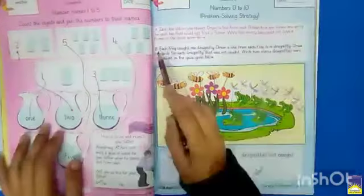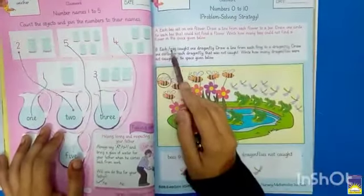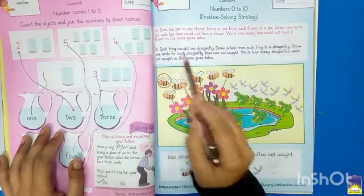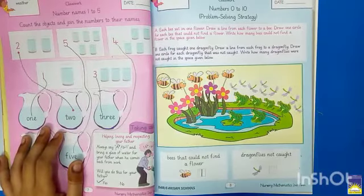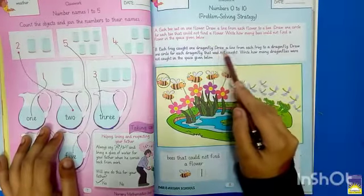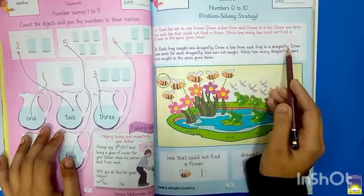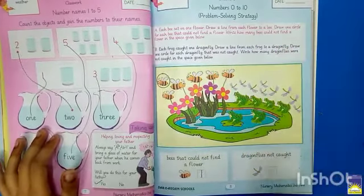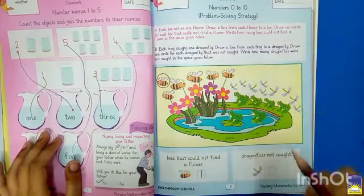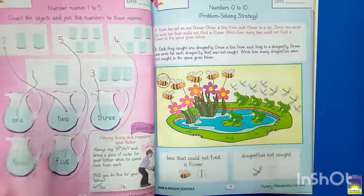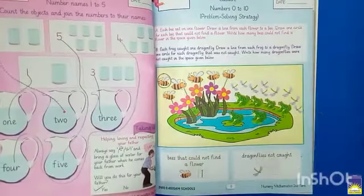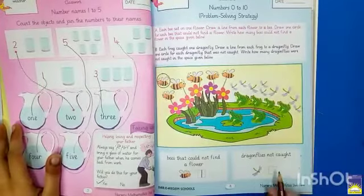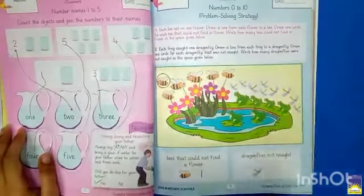Students, we will see: each frog caught one dragonfly. Each frog has one dragonfly. Now draw a line from each frog to a dragonfly. Each frog caught one dragonfly, so we have to find it. The dragonflies that the frogs have not eaten — we have to write it here. You can also do it with me.